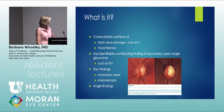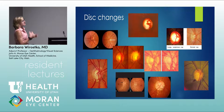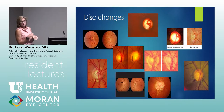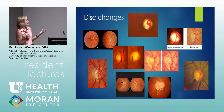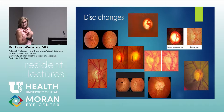Disc changes include cupping — deep, large, suspicious cups — but it's really the progressive change to the nerve fiber layer, rim notching, and nasalization of vessels. None are truly pathognomonic. A Drance hemorrhage or nerve fiber layer hemorrhage is more pathognomonic. If you see a hemorrhage, the first thing to think about is the pressure.